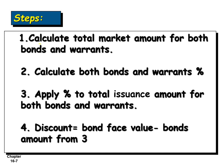The four steps are as follows: First, calculate the total market value for both the bond and the warrant using the given information — 98% for bonds and $40 per warrant. Second, calculate each one's percentage separately. Third, apply that percentage to the amount collected to make the separation. Fourth, calculate the discount, which is the bond face value minus the bond amount calculated in step three.